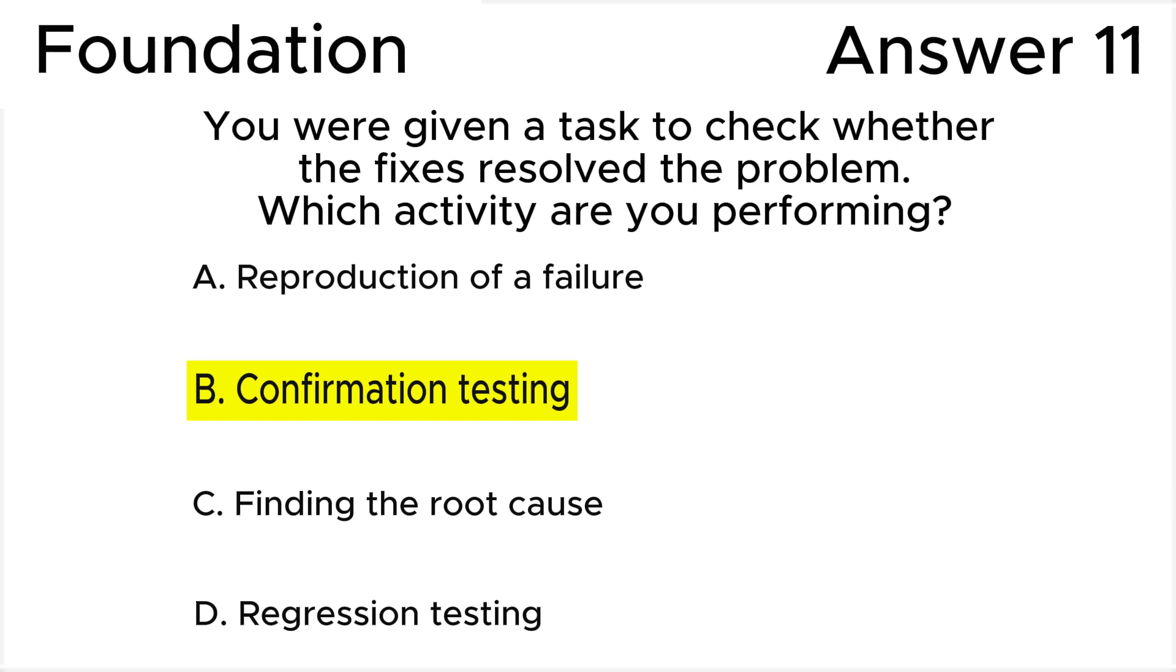Let's see why the other answers are wrong. Answer A is wrong because reproduction of a failure is debugging. Answer C is wrong because finding the root cause is debugging too. Answer D is wrong because regression testing is the process of checking whether the fixes are causing failures in other parts of the test object.